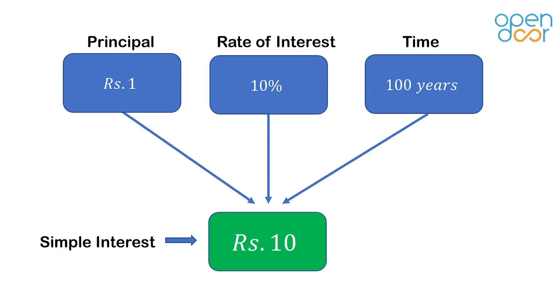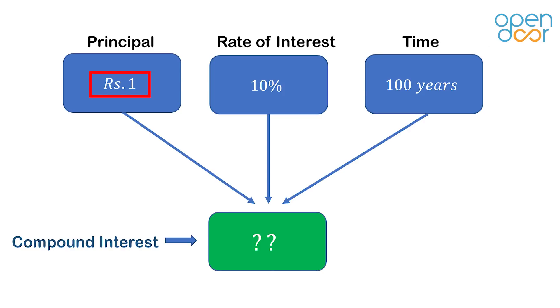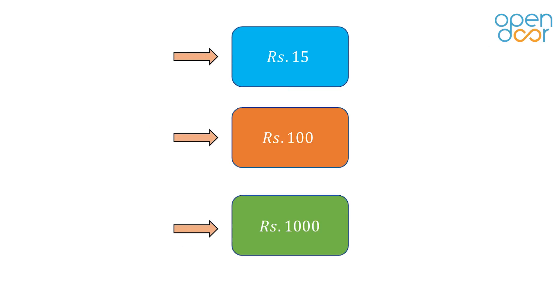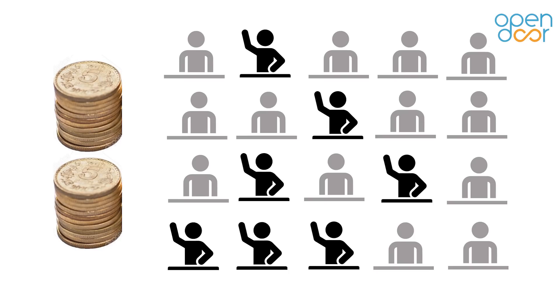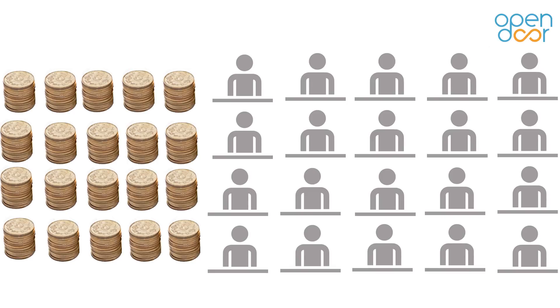Now let's do the same thing using compound interest. You have 1 rupee, same time and same rate. These are your options — give it a thought. Let me show you what happened in my class when I asked the same question. This is the response for 15 rupees, and this is the response for 100 rupees. And the interesting thing is nobody thought it could be 1000 rupees.